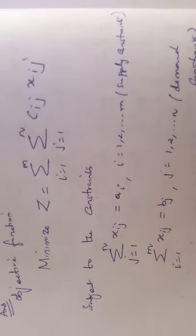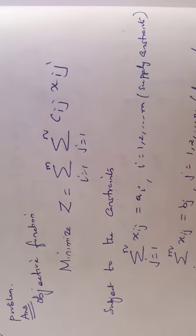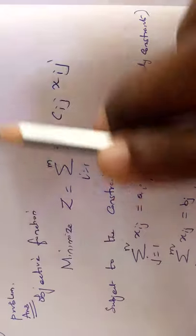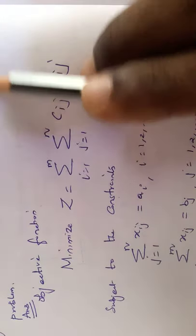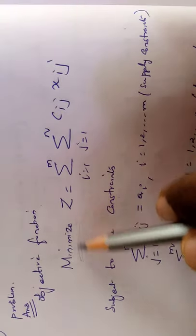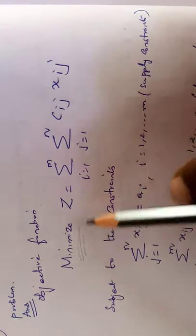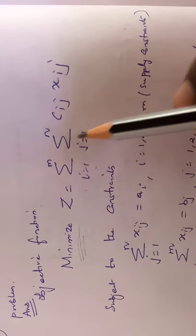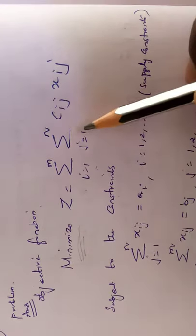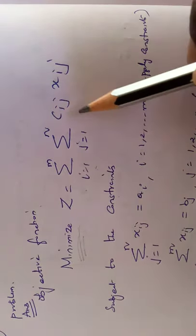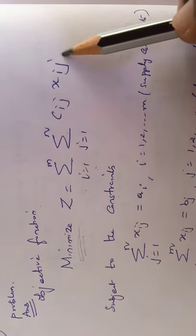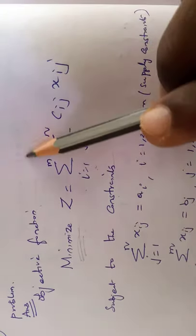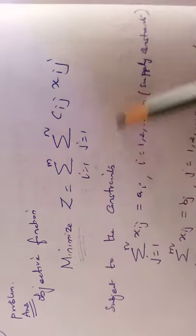The first part is to minimize the cost. The transportation problem objective function is: Minimize Z = Σ (i=1 to m, j=1 to n) c_ij · x_ij. This is the short form of the objective function.